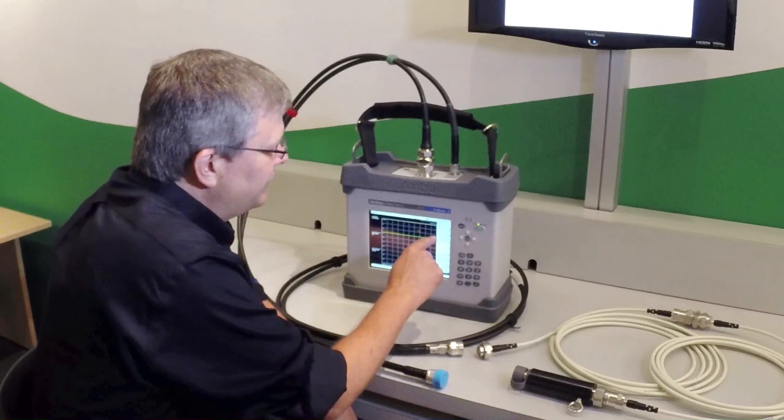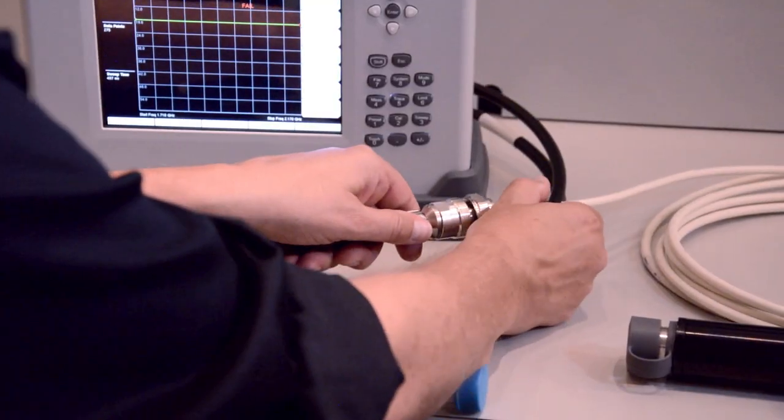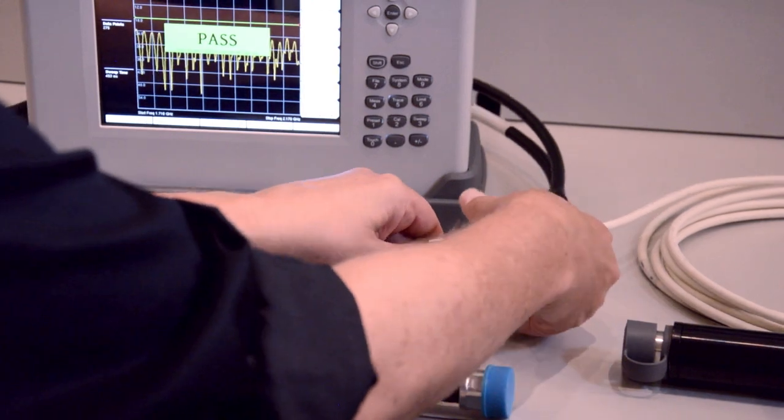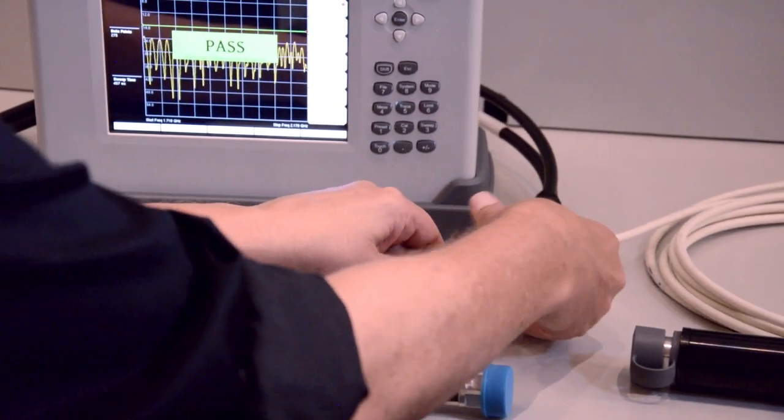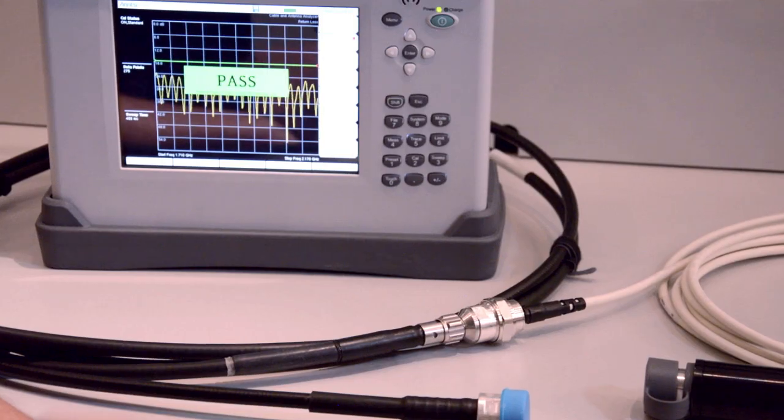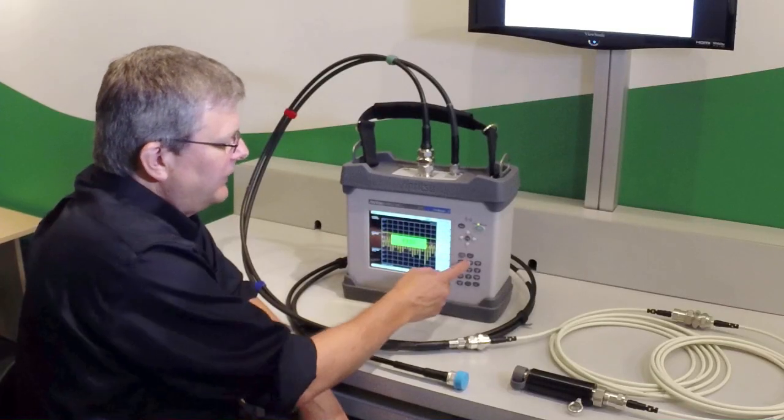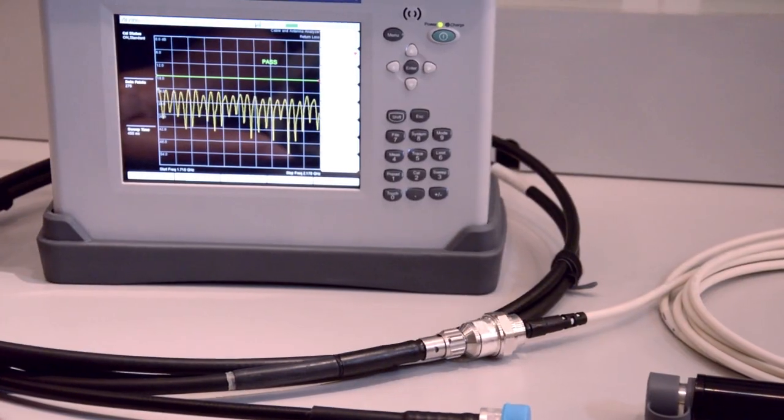The first thing we're going to do is do a quick return loss check of the system to see if this is a working system. Standard procedure says that you should always perform your sweep tests first before performing PIM tests. Looking at this, I have a limit line set at minus 18 dB and we are passing, so we have a good system to start with.